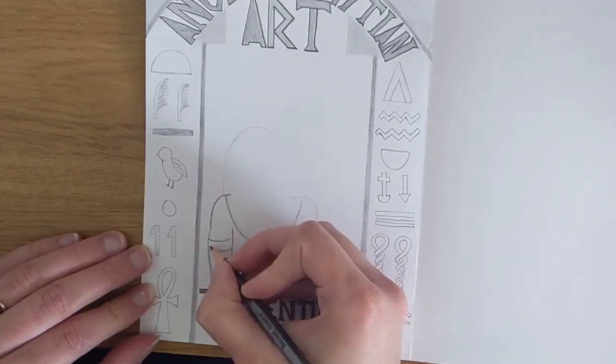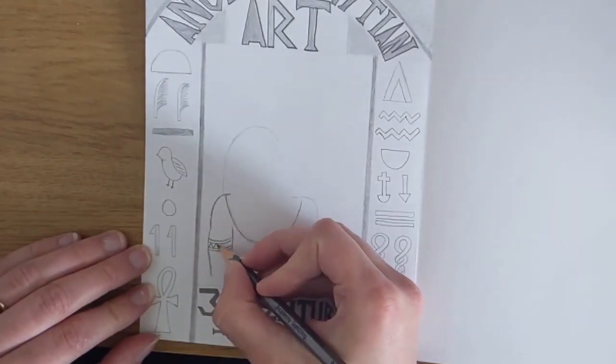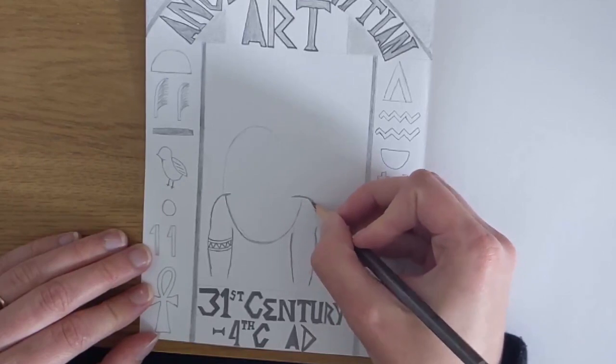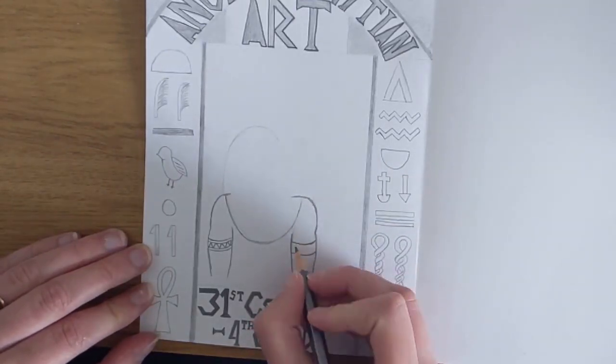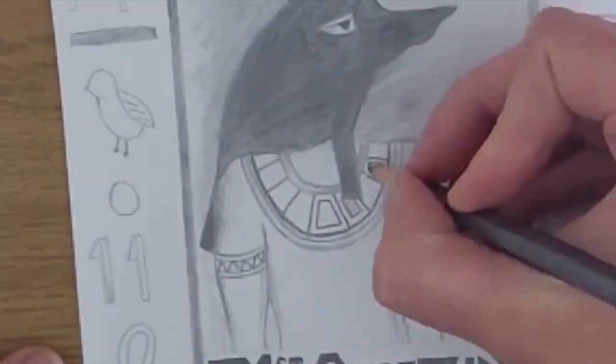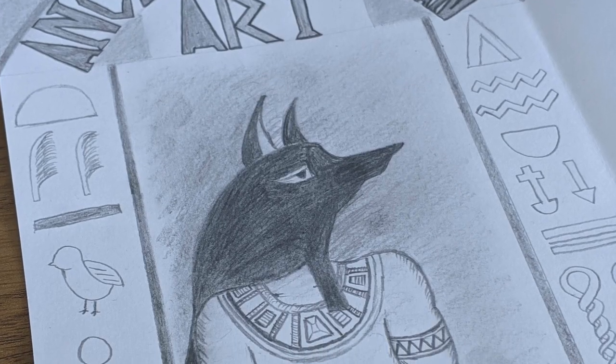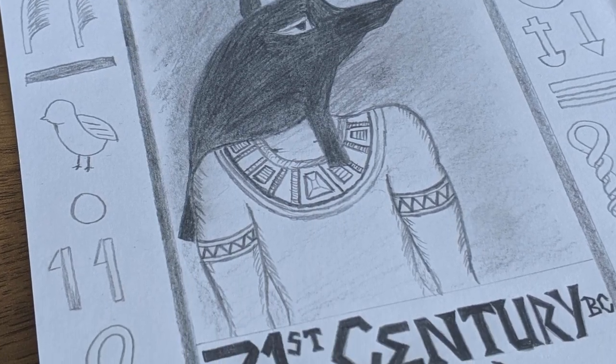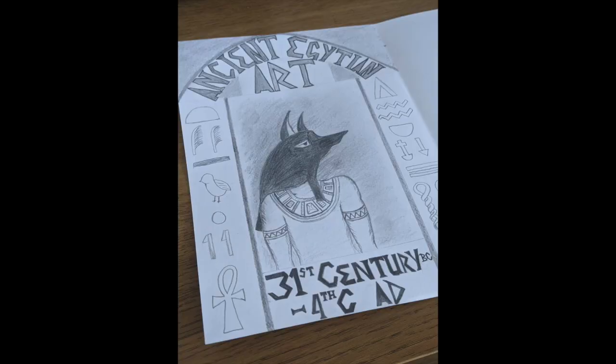Once you've sketched out your drawing showing the style of the art movement you can add different tones with your pencil or coloring pencil if you've got them. Remember if you're using coloring pencils to rub out the graphite underneath. And now you've finished your first page on Egyptian art. Yours can look like mine if you want to or you can create your own.